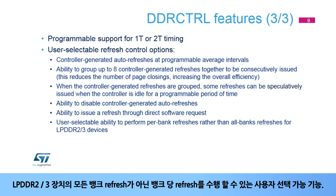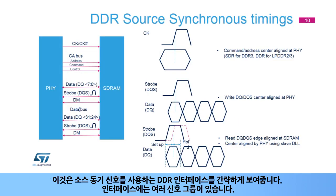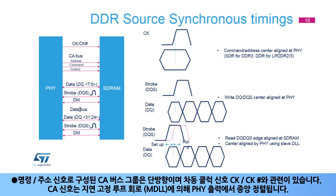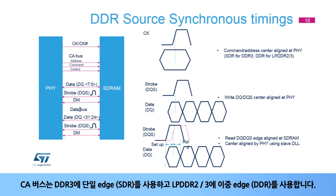User-selectable ability to perform per-bank refreshes rather than all-banks refreshes for LPDDR2 or 3 devices. This is a simplified view of a DDR interface using source-synchronous signaling. The interface has several signal groups. The CA bus group consists of command-address signals — unidirectional and related to the differential clock signals CK and CK#. CA signals are center-aligned at PHY output by the delay-locked-loop circuit, or MDLL. The CA bus uses single-edge, SDR, for DDR3, and dual-edge, DDR, for LPDDR2 and 3.